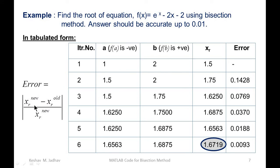We have solved this example, and using the relative error formula we calculated the relative error after each iteration. The relative error formula is: mod of (xr_new minus xr_old) divided by xr_new. We can calculate this from the second iteration onwards because we need two values of xr. For example, after the second iteration xr_new is 1.75 and xr_old is 1.5, giving a relative error of 1.75 minus 1.5 divided by 1.75, which equals 0.1428.